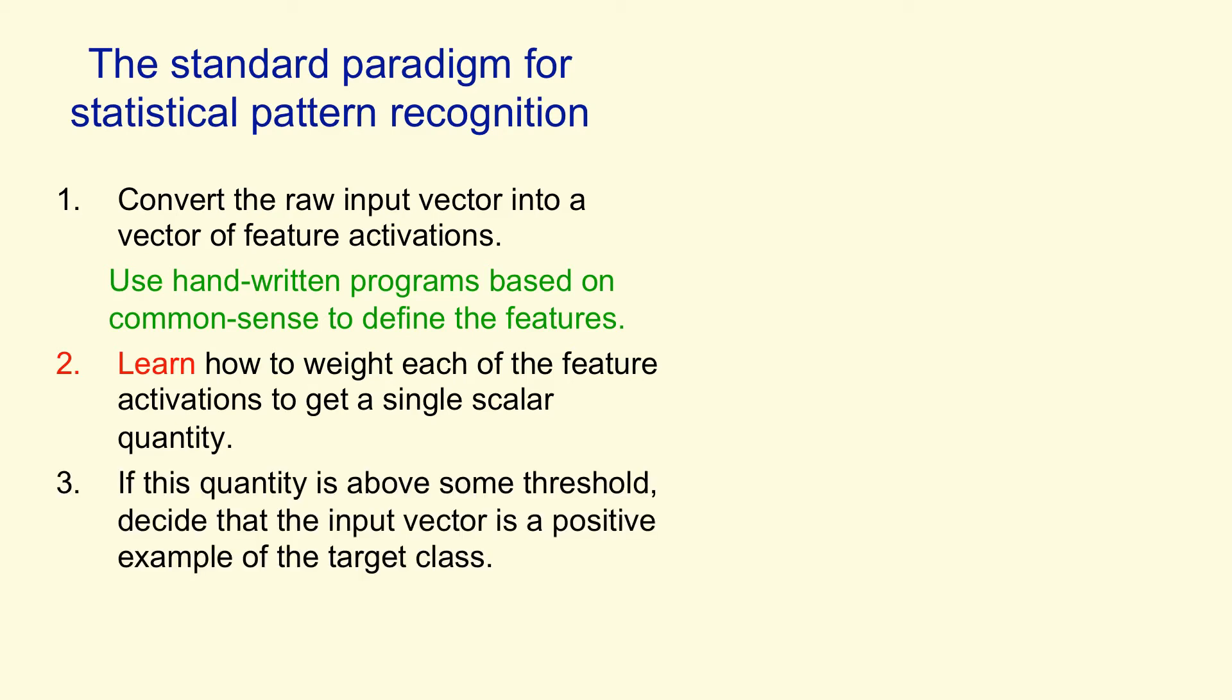And if that evidence is above some threshold, we decide that the input vector is a positive example of the class of patterns we're trying to recognize.